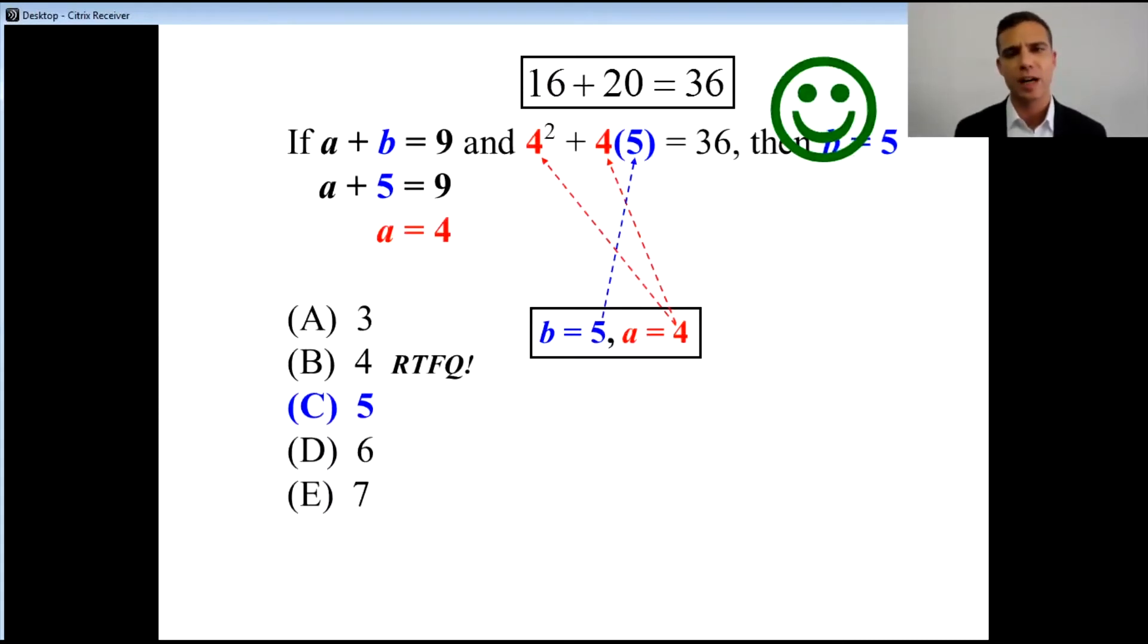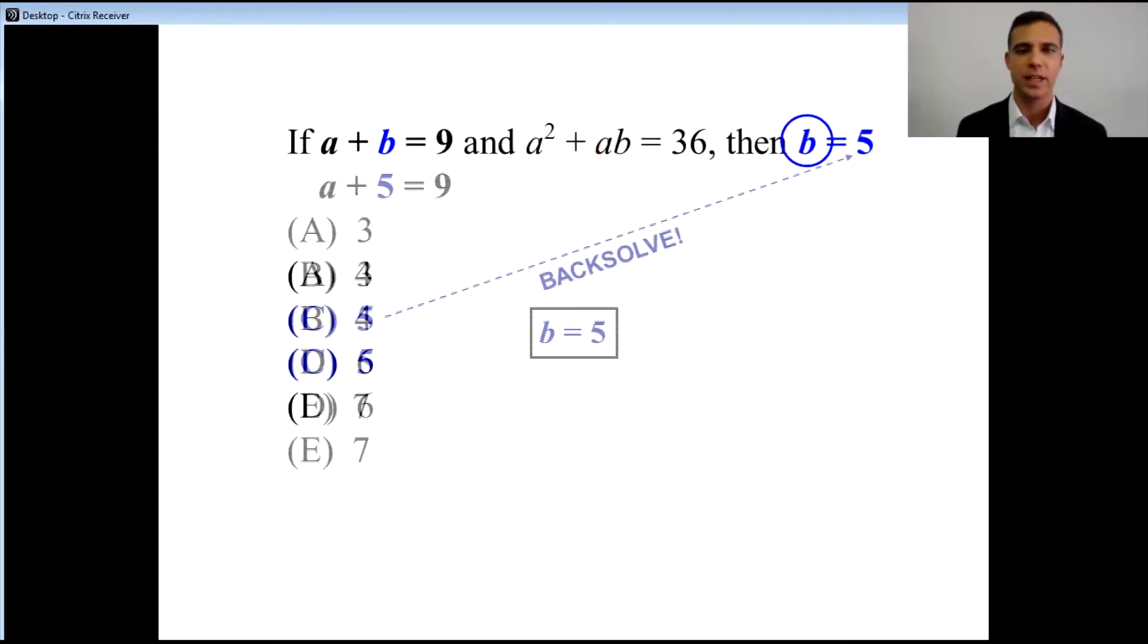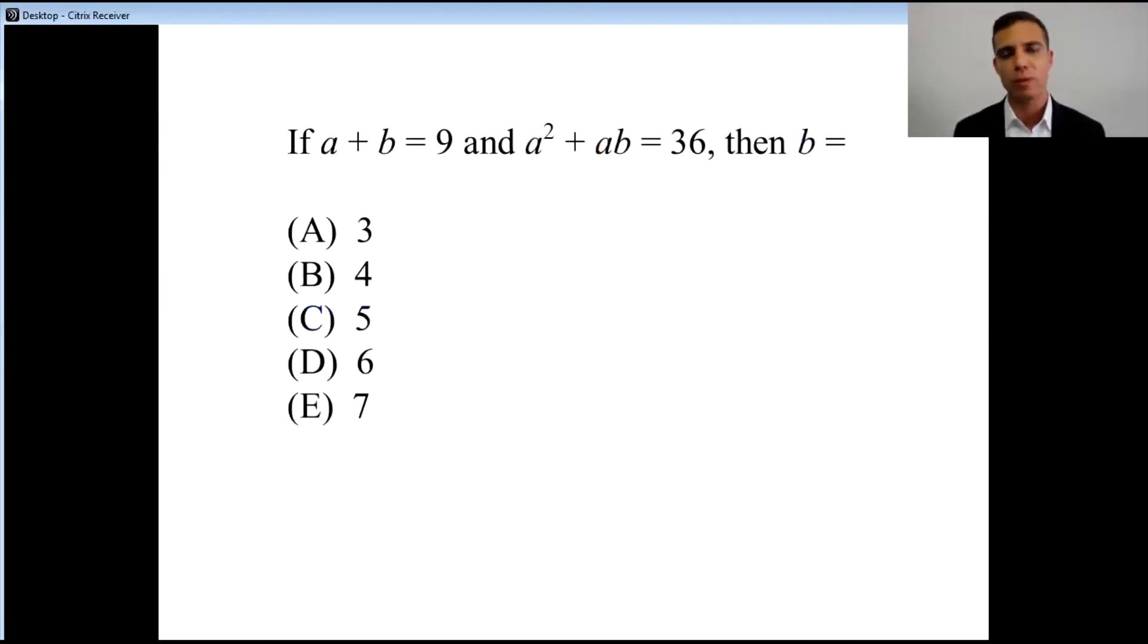This is a lot easier than trying to solve the algebra in the traditional way most students are used to. What you'd have to do is set one of the variables equal to the other by subtracting b from one side. So a equals 9 minus b, and if a equals 9 minus b, and we go back to the beginning of the question, what would we have? We would have 9 minus b squared plus 9 minus b times b equals 36. Man, that sounds pretty awful.